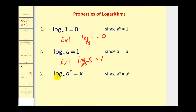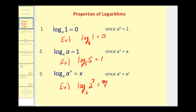Property three: log base A of A to the power of X equals X. That's true because if I take A and raise it to the power of X, it will equal A to the X. The pattern here is if the base and this base are the same, it will always equal the exponent. For example, log base two of two to the seventh equals seven.